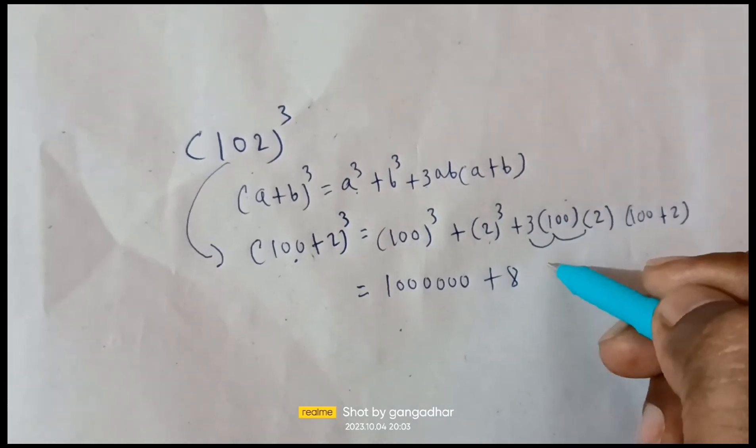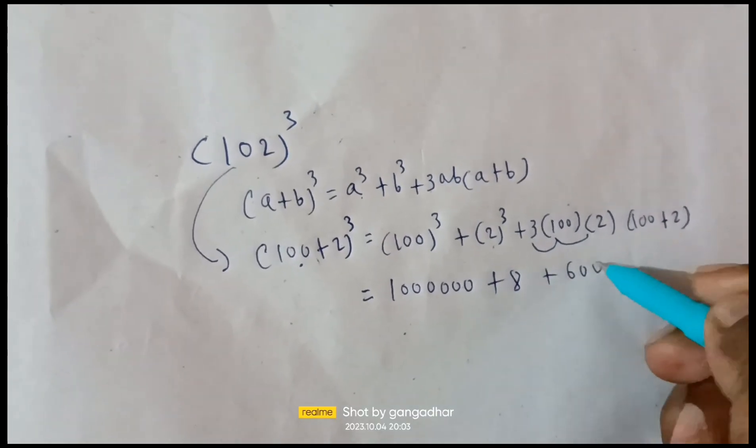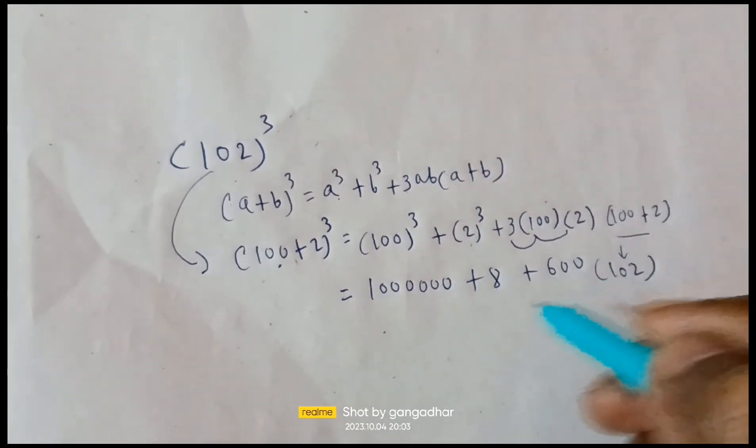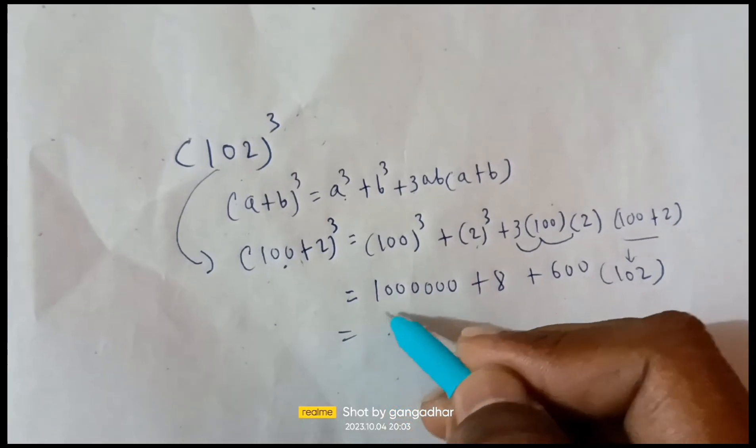Plus 3 times 100 times 2 equals 600, times (100+2). So we have 1000000 plus 8 plus 600 times 102.